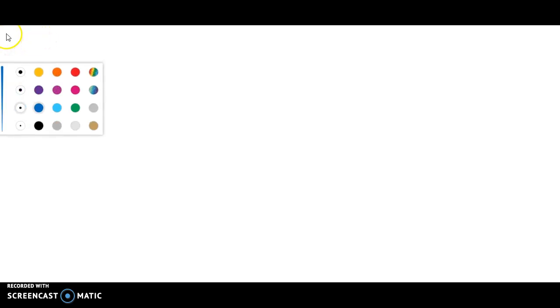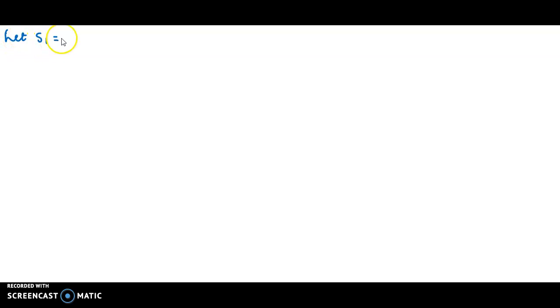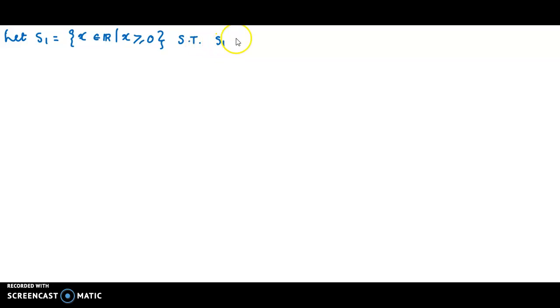Now come to the next question. Let S1 equal to the set of all x element of R, the real line, such that x is greater than or equal to 0. Show that S1 has lower bounds but no upper bounds.